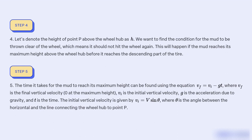5. The time it takes for the mud to reach its maximum height can be found using the equation Vf equal to Vi minus gt, where Vf is the final vertical velocity, 0 at the maximum height, Vi is the initial vertical velocity,